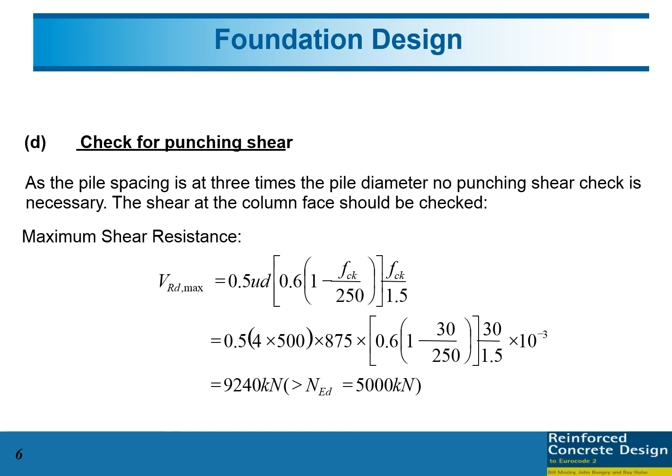The next step is to check for punching shear. First we calculate the maximum shear resistance. U is the perimeter of the column. Because we have a column with dimension 500 by 500, a square column, so 500 multiplied by 4, then effective depth 875, and FCK 30, so we have VRDC maximum is 9240 kilonewtons. We compare with the total load applied to the column. This is higher compared to 5000 kilonewtons, so this is sufficient for punching shear. Thank you.